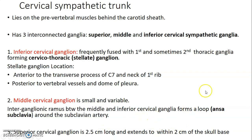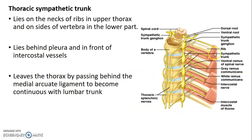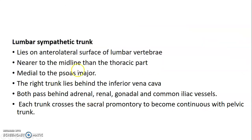The thoracic sympathetic trunk lies on the neck of the ribs in the upper thorax and at the side of the vertebra in the lower part, behind the pleura and in front of the intercostal vessels. The thoracic trunk leaves the thorax by passing behind the medial arcuate ligament to become continuous with the lumbar trunk. The lumbar trunk lies on the anterolateral surface of the lumbar vertebra, medial to the psoas major muscle. The right lumbar trunk lies behind the inferior vena cava, and both trunks pass behind the adrenal, renal, gonadal, and common iliac vessels, crossing the sacral promontory to become continuous with the pelvic trunk.